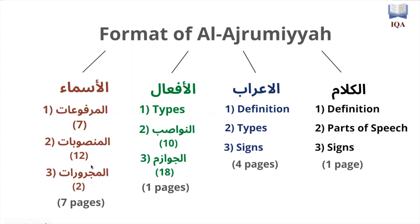Now, nouns have three subsections for this topic: al-marfu'at — the nouns that are marfu'; al-mansoobat — the nouns that are mansoob; and al-majroorat — the nouns that are majroorun. We don't talk about nouns that are majzooman, because a noun can never be majzooman. Al-jazm is only for the fi'l mudari', never for any type of noun.